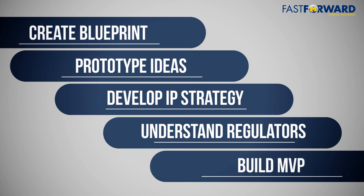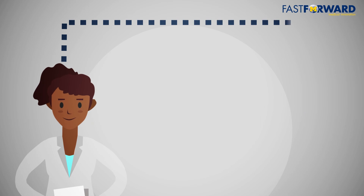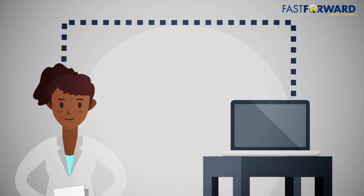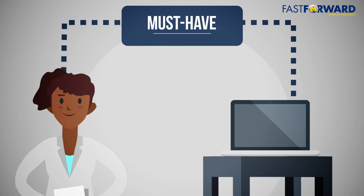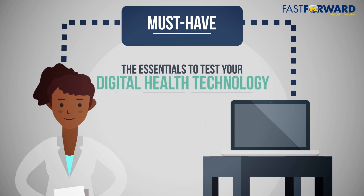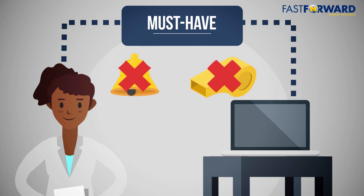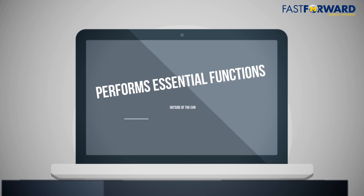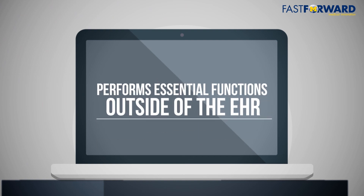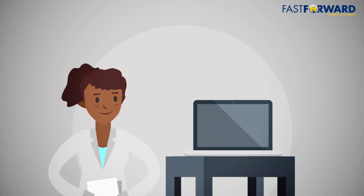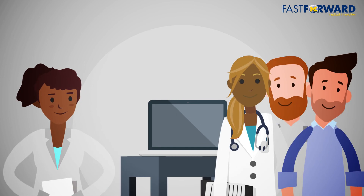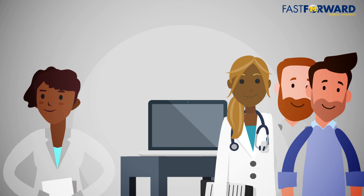The next section of the roadmap is the MVP, or minimum viable product. The MVP is the minimum set of features and functions that your product needs to be testable in your local environment. Think must-have versus nice-to-have. An MVP contains the essentials to test your digital health technology, but the final product could include the bells and whistles. For example, an MVP could be a standalone app that performs essential functions outside of the EHR, but may require direct input from clinicians or patients. Because integrating with the EHR is complex, technically difficult, and expensive, it may not be considered essential in the MVP. The app will function within your environment, allowing you to test it earlier without the added development costs of being a fully EHR-integrated app.